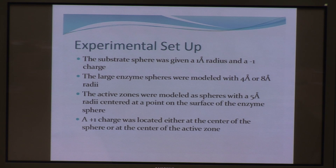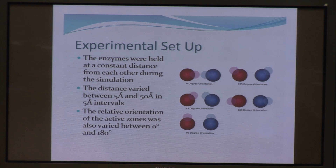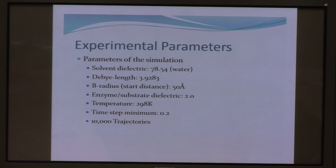The two enzymes were considered one molecule and held fixed relative to each other during the simulations. I varied the distance between them from five to 50 angstroms in five angstrom intervals, and I also changed the orientation of the active zones, rotating them by 45 degrees between zero degree and 180 degree orientations. The start distance was 50 angstroms, and I used 10,000 trajectories for each setup.